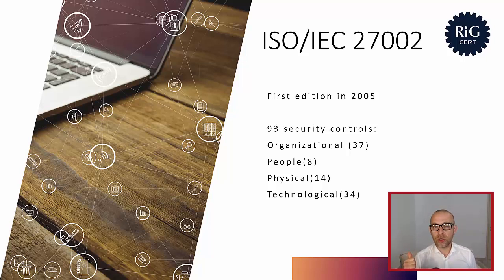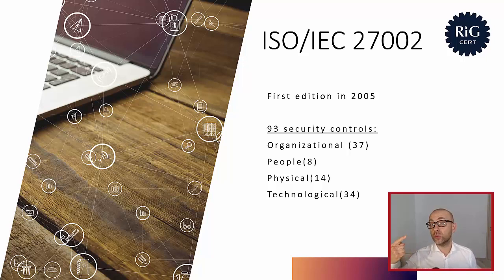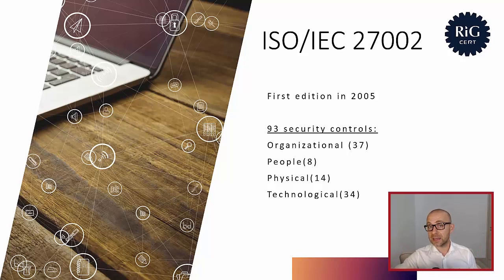If you are familiar with the previous edition of the standard — the one from 2013 — you will see that there are some changes. Some new controls have been introduced, some controls from the previous edition have been merged, and some have been eliminated. Instead of having 114 security controls divided into 14 categories (as in the 2013 edition), we now only have 93 controls divided into 4 categories. This periodic revision process is intended to ensure that standards remain up to date and follow the latest developments.